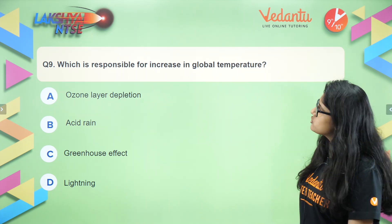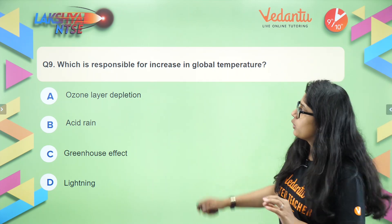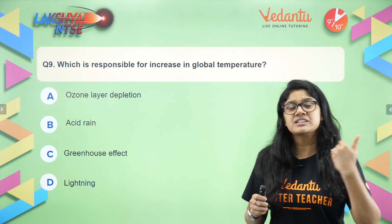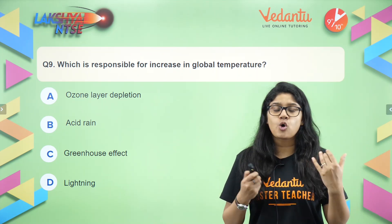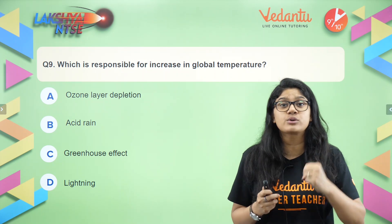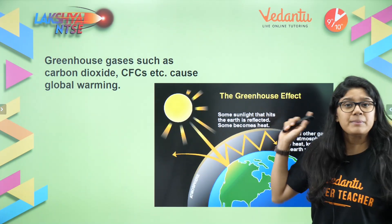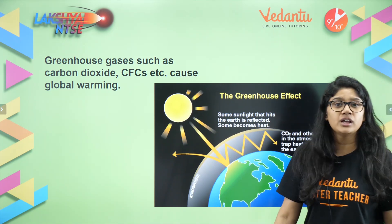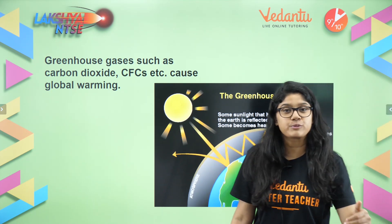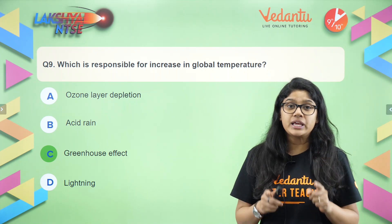Which factor is responsible for increasing global temperature? This is about global warming — the increase in Earth's temperature because of greenhouse gases, which trap more heat and cause temperature to rise. The right answer is option C, the greenhouse effect. Greenhouse gases such as carbon dioxide and CFCs cause global warming by trapping heat and preventing it from escaping.